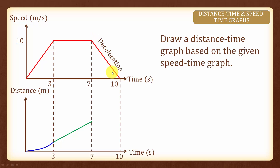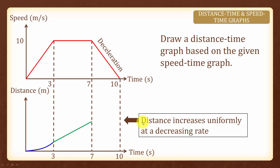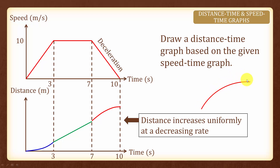Next, we have a constant deceleration, whereby the distance is increasing uniformly but at a decreasing rate. Whenever speed decreases, distance will still increase, and therefore we will have a convex looking curve. You will notice that as time increases, the slope is getting smaller and smaller. The slope under a distance time graph is the speed, and therefore the speed is decreasing over time. When speed is decreasing over time, we will have a convex looking curve.